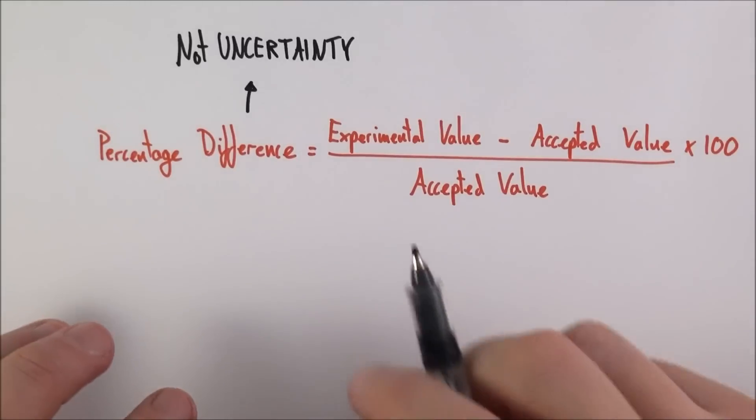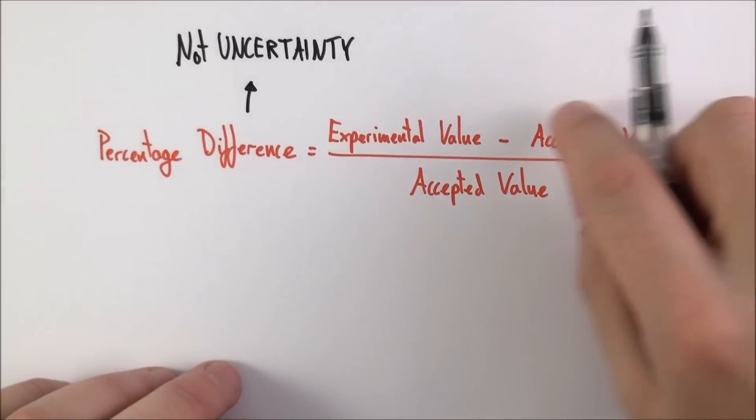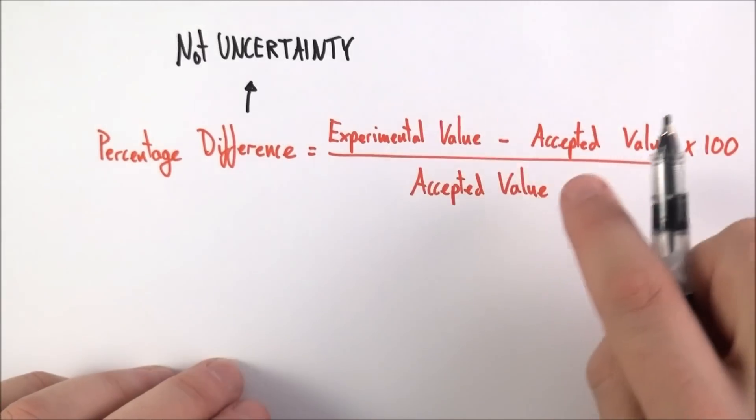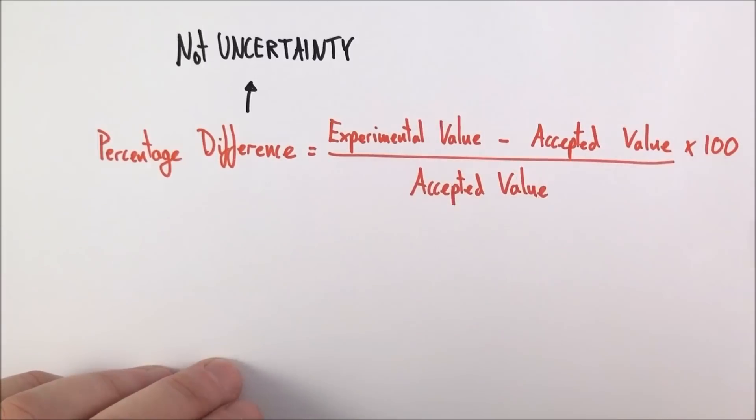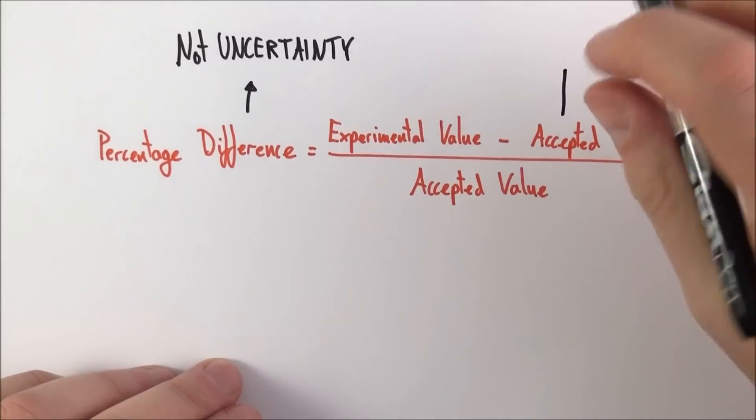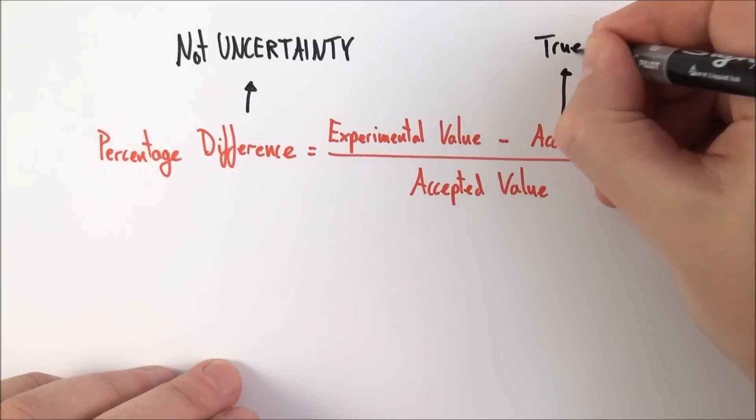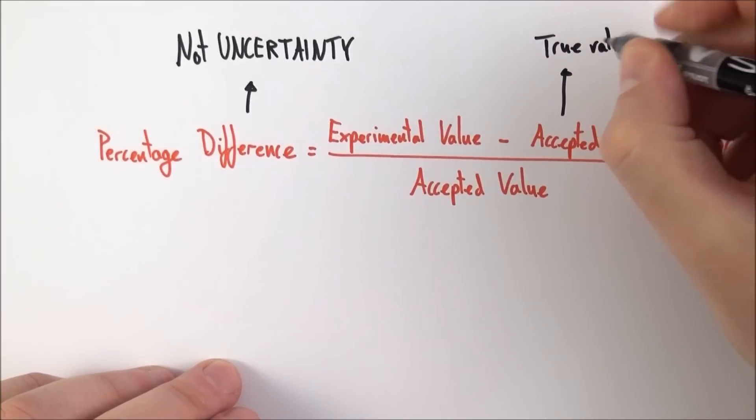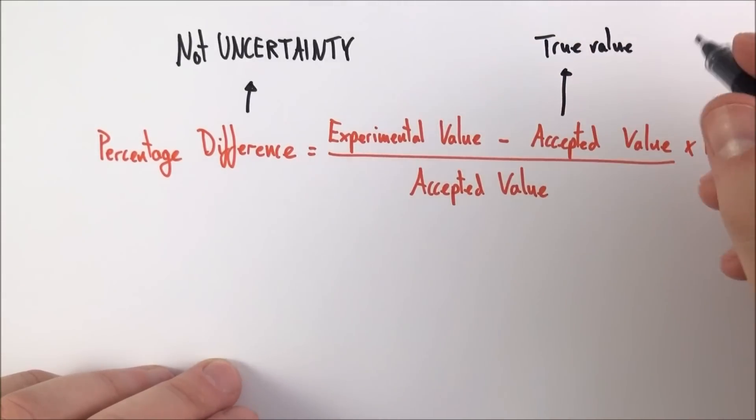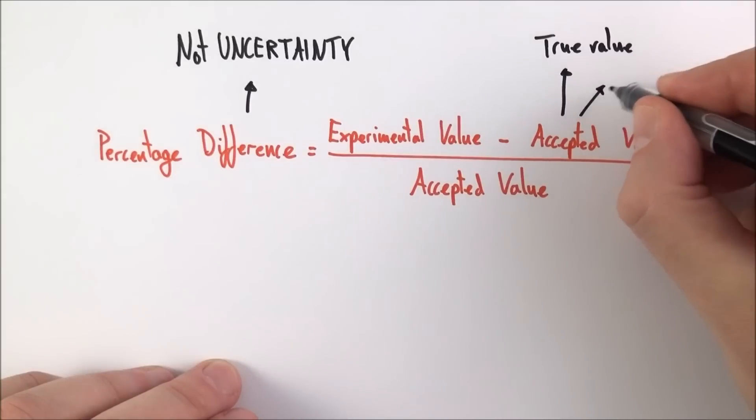Let's give an example to show what we mean. First of all, we have the experimental value minus the accepted value over the accepted value. This accepted value is maybe the constant that you're looking for. Sometimes it's called the true value, which might have been found by various other experiments, or sometimes it's the value that you get from a data book.